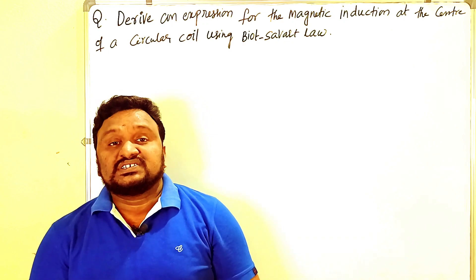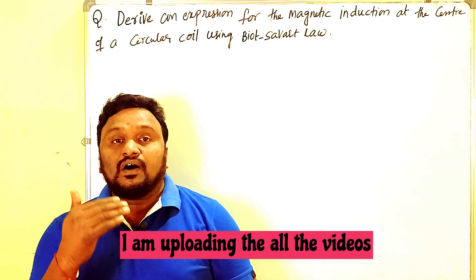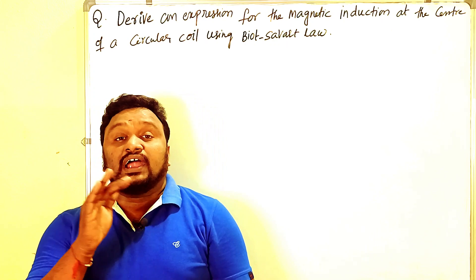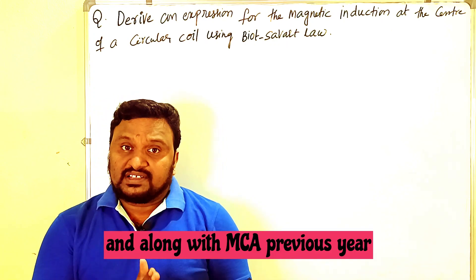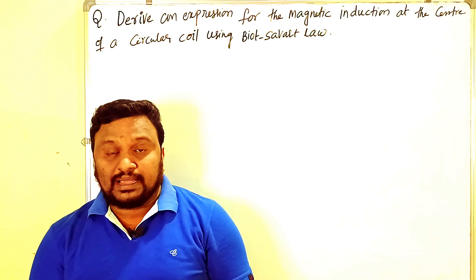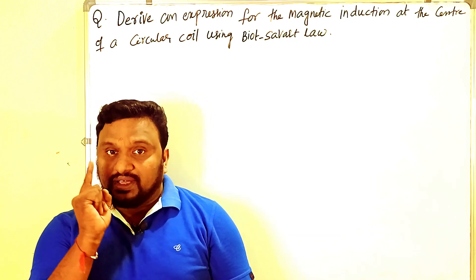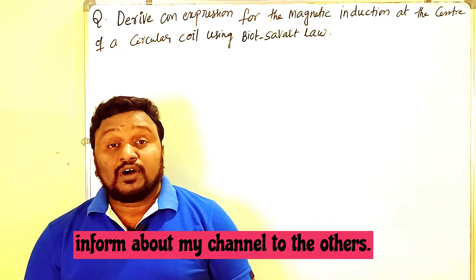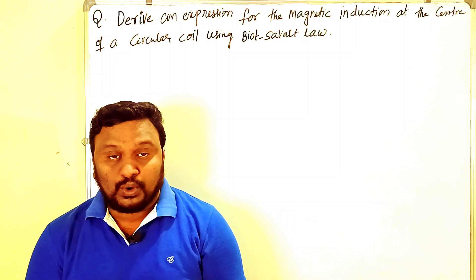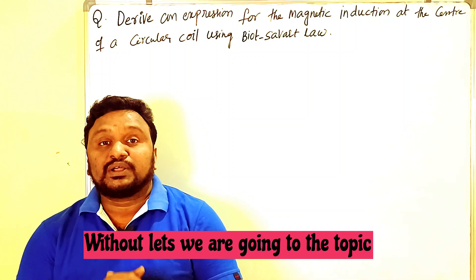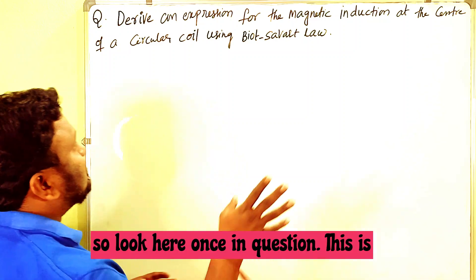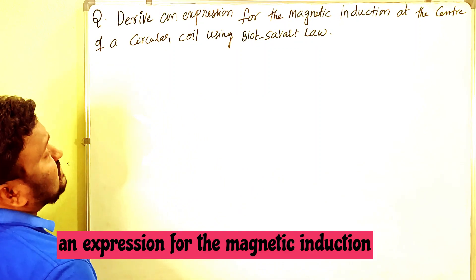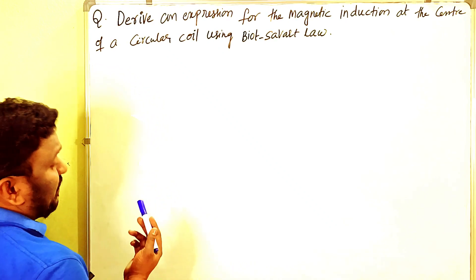Before starting, I am uploading all the videos regarding intermediate first year and second year physics, along with MSET previous year questions and syllabus. Please subscribe to my channel and press the bell icon. Now let's go to the topic: derive an expression for the magnetic induction at the center of a circular coil using Biot-Savart's law.